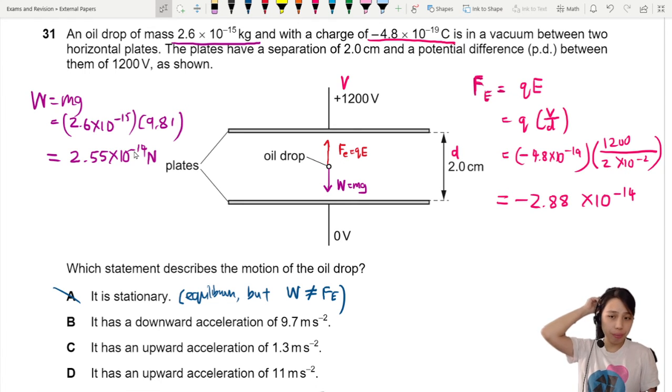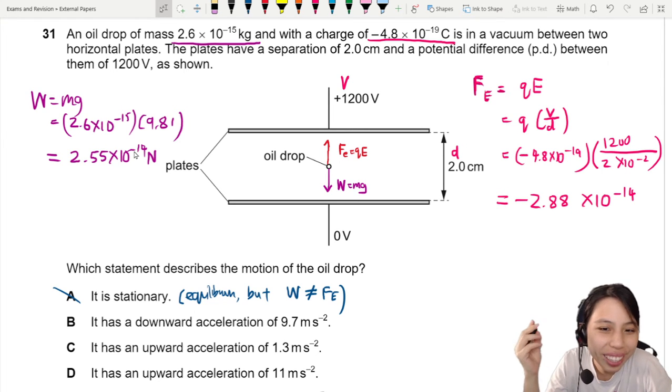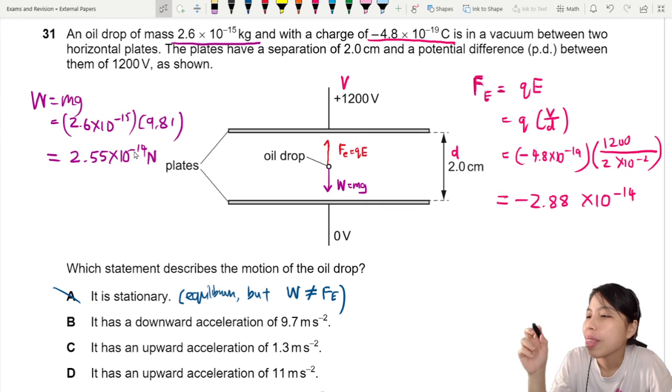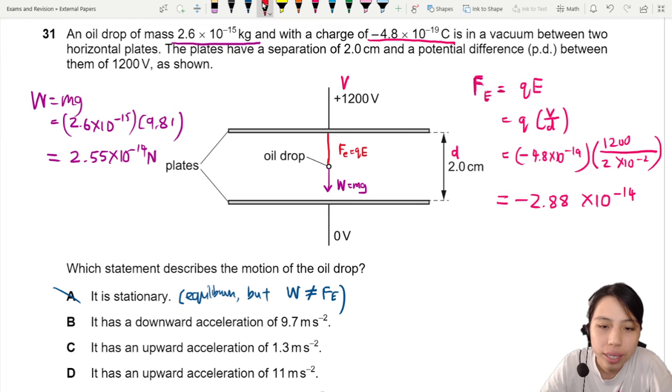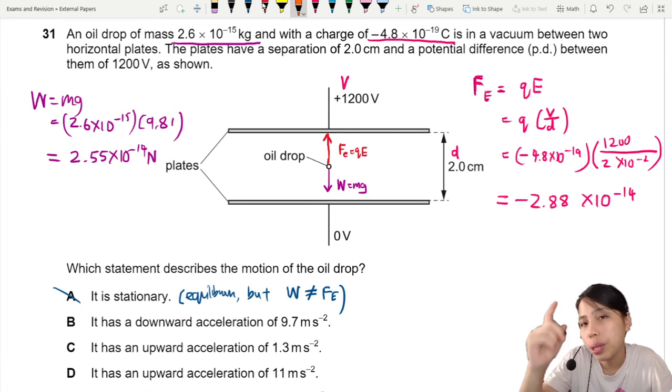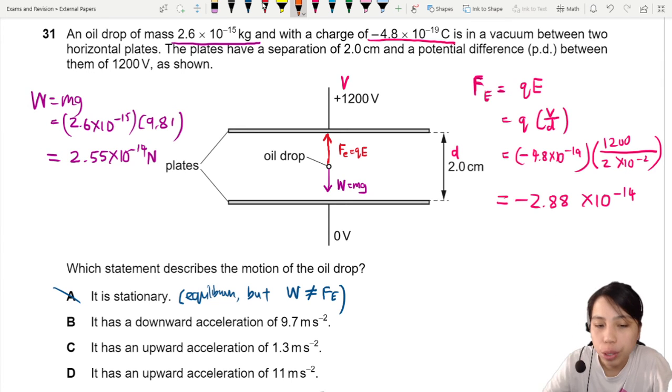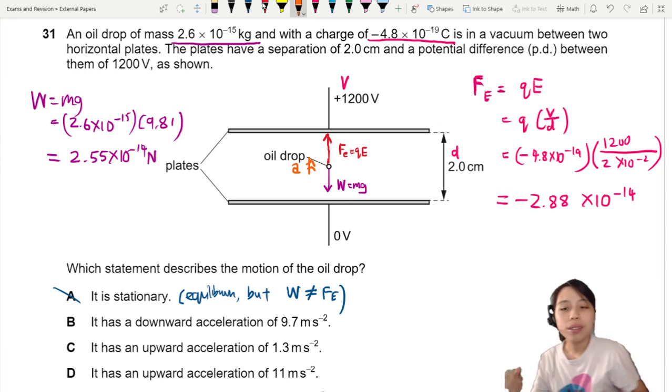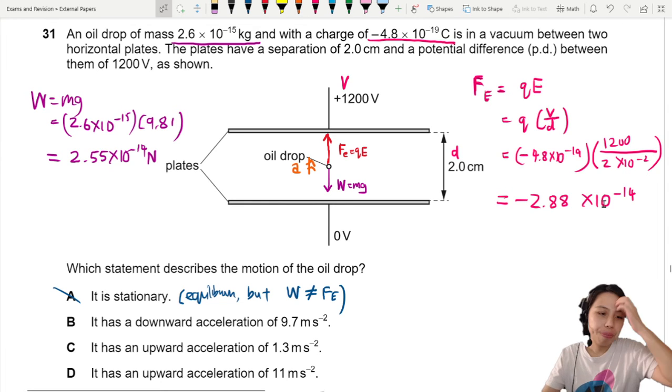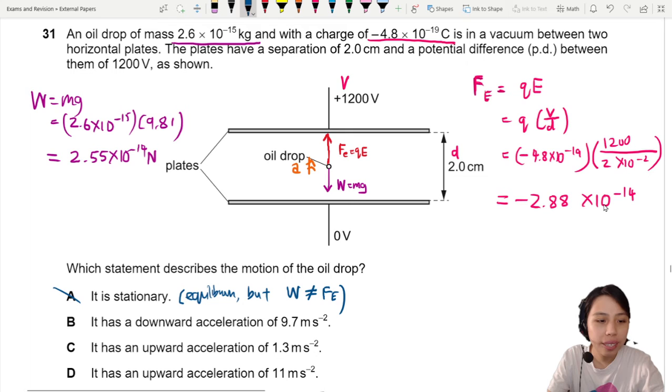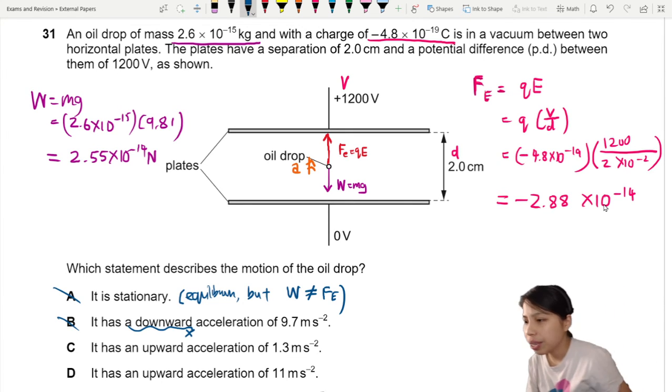We need to find the acceleration but before that which force do you think will win? I think 2.8 is bigger, bigger by a bit so we could draw this arrow to be slightly bigger. So that means you have a net force pointing upwards which means the oil drop will start to accelerate upwards. So we can kind of cancel out B as well because downwards is not correct.